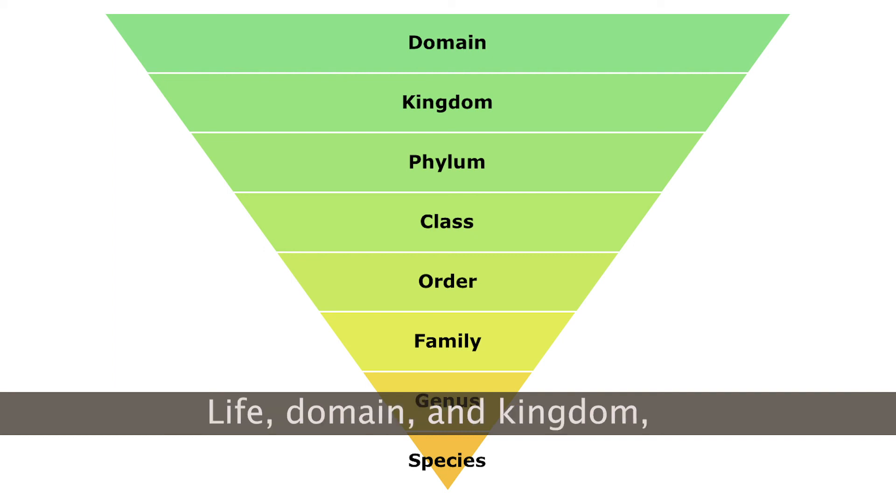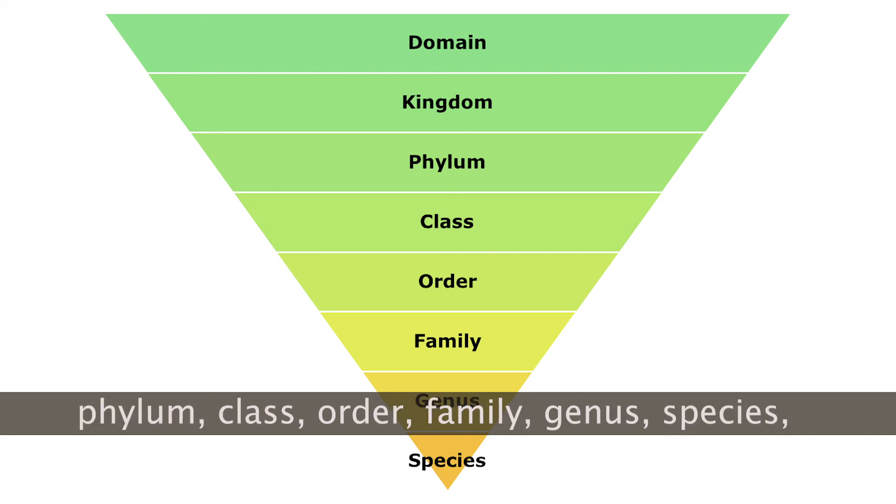The hierarchy of taxonomic ranks: life, domain, and kingdom. Phylum, class, order, family, genus, species. We're done!